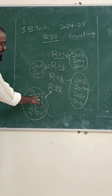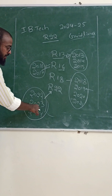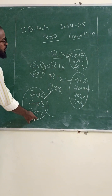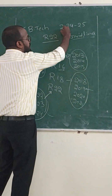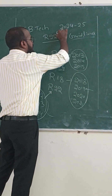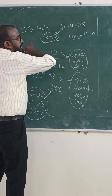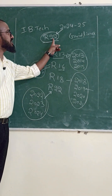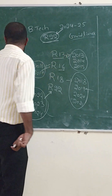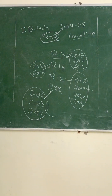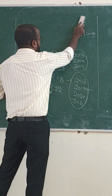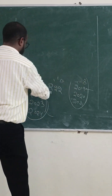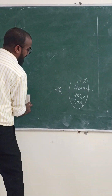R22 was introduced in the academic year 2022 and is continuing for the 2023 and 2024 batches. That is why the 2024 batch students come under R22 regulation. These students should follow the R22 guidelines given by JNTUH. This is about the regulation pattern.